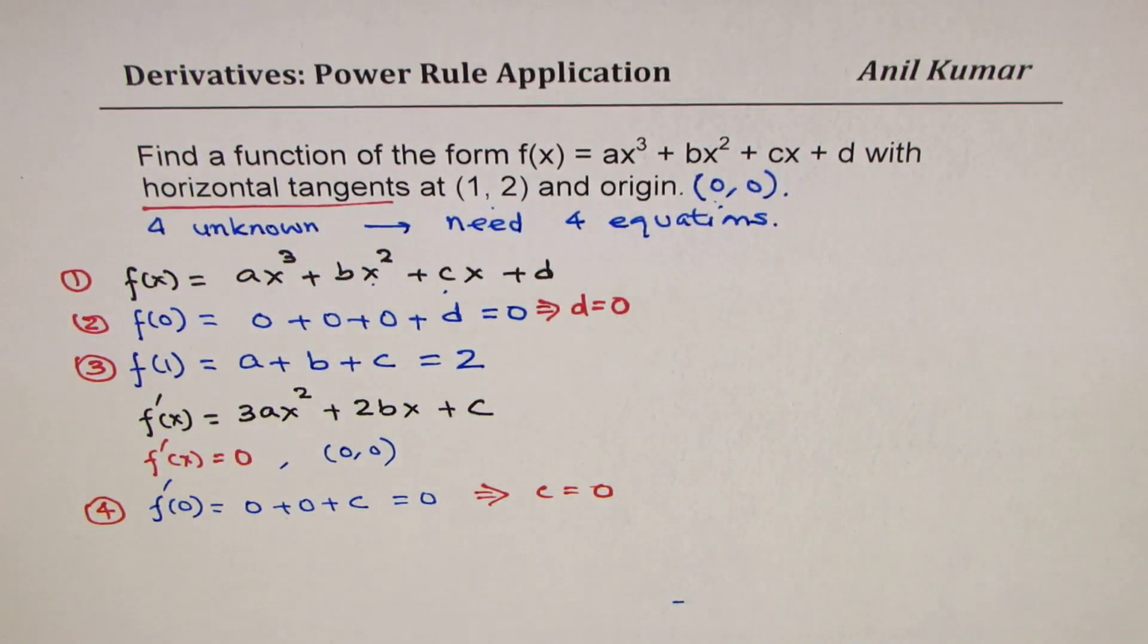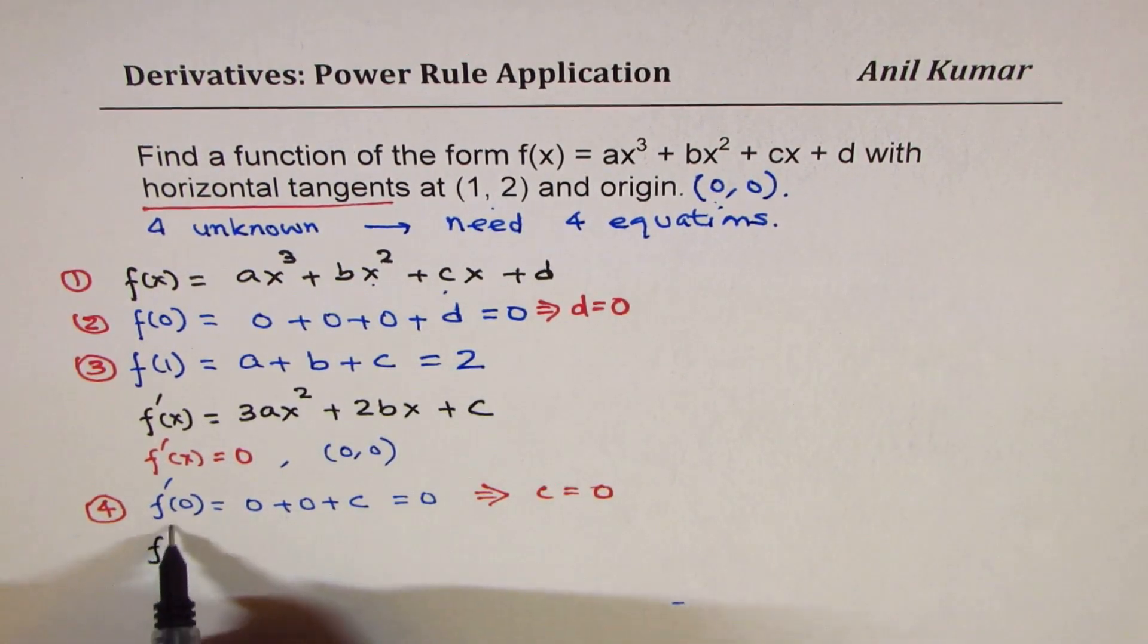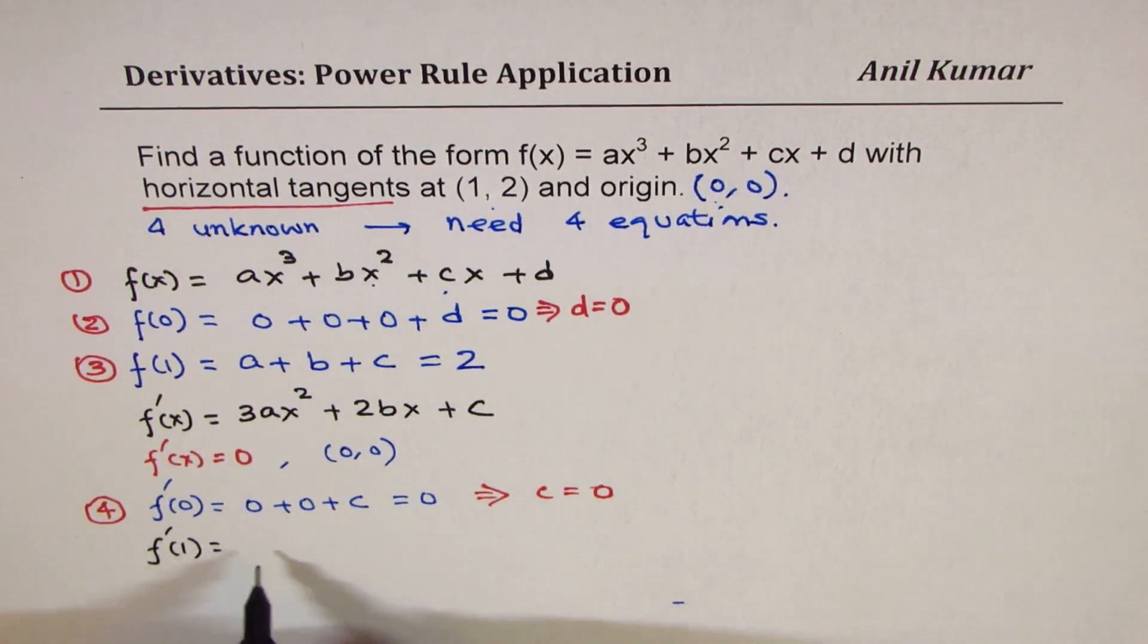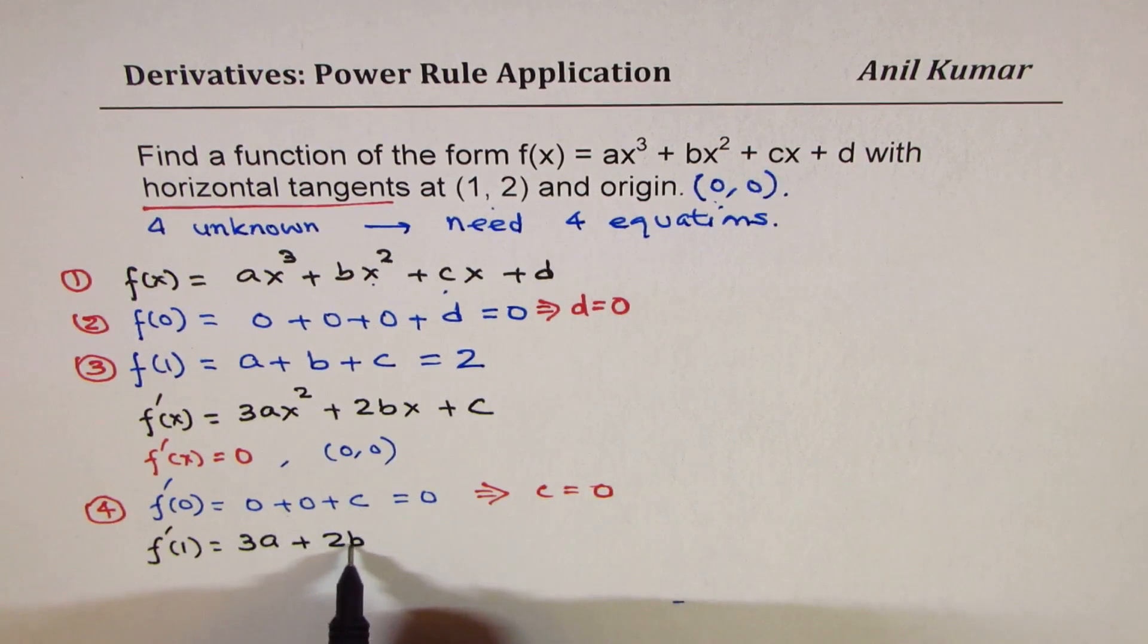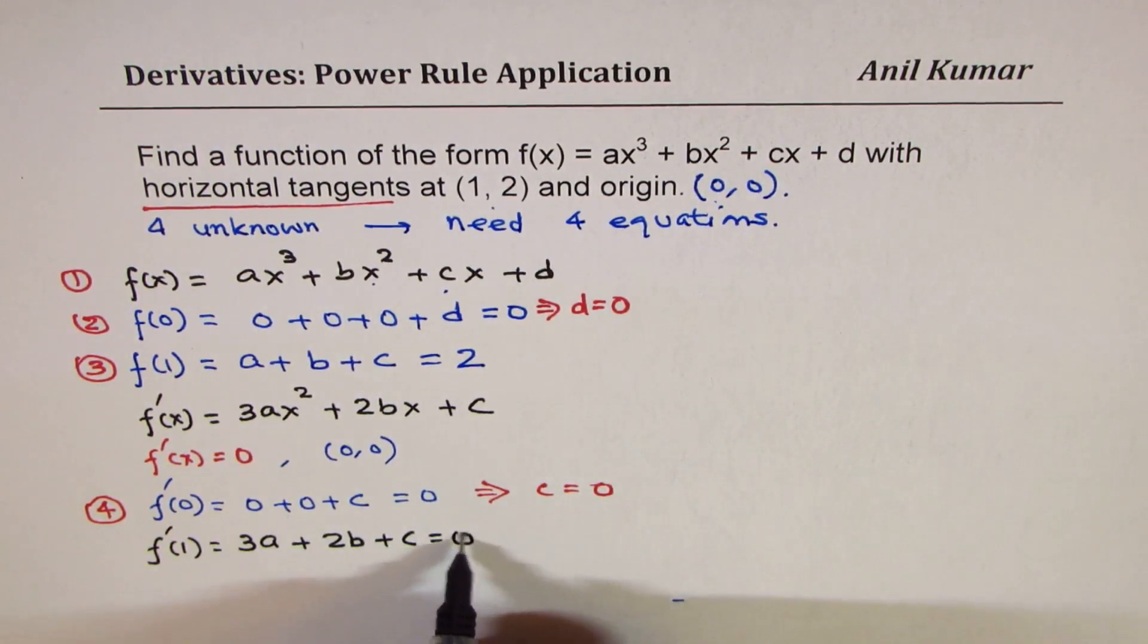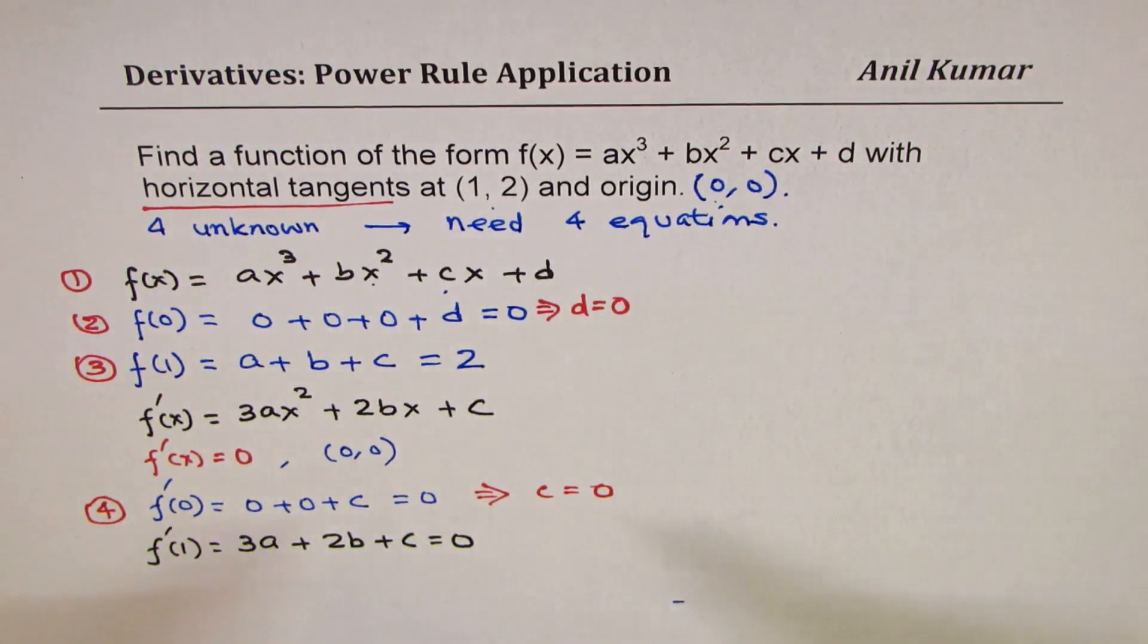So that is our fourth condition. Now we can substitute the value of x equals to 1 and get another equation. So I also know that the derivative at 1 is also 0. So if I substitute 1 in this derivative, I get 3a plus 2b plus c, and this is also equal to 0. So this is for horizontal tangent.